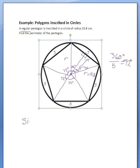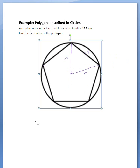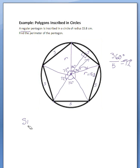We know that the sine of 36 degrees is equal to the opposite side, which would be one-half S — the length from here to here — divided by the hypotenuse, which is 15.8 centimeters.